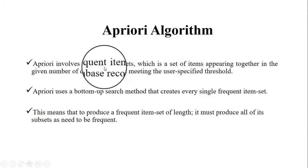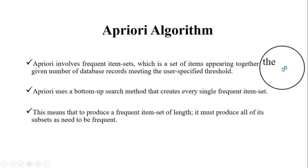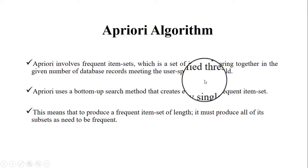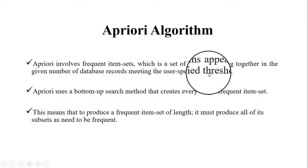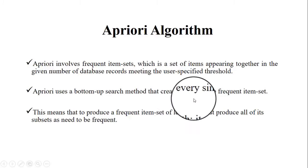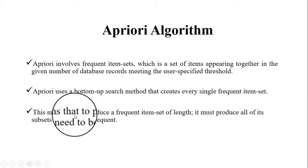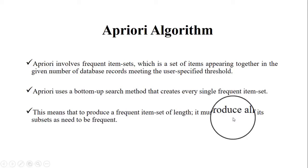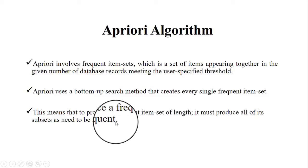Apriori algorithm involves frequent item sets — a set of items appearing together in a given number of database records meeting the user-specified threshold. The user specifies a minimum threshold level and the algorithm generates frequent item sets based on that, rejecting item sets with support count less than the minimum support value.